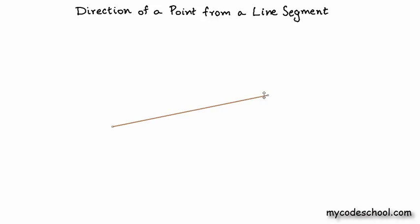Let's say I have a line segment AB and a point P. What we want to know is, if we are travelling along the line segment from A to B, whether P is to our left — which it is in this case — or whether P is to our right. The point P doesn't have to lie between A and B. A point that lies much behind the line segment AB still counts as being to the right of AB.